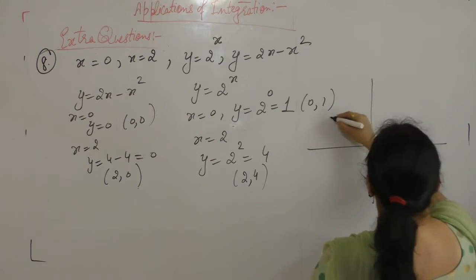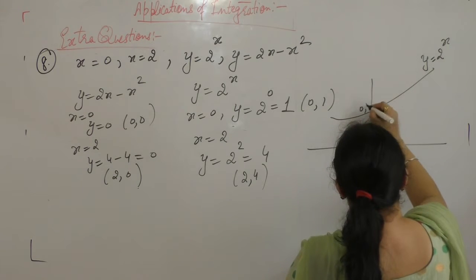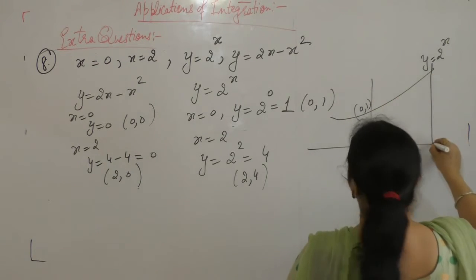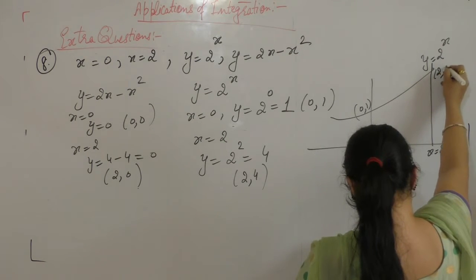Now we draw the rough sketch, this is the curve y is equal to 2 power x, this is the point 0, 1, x is equal to 2 here, so this is 2, 4.